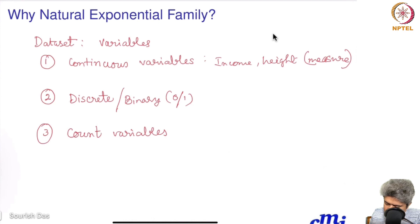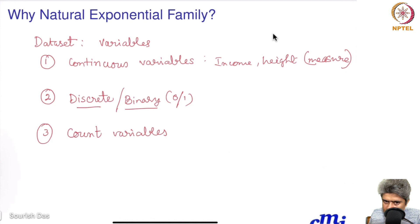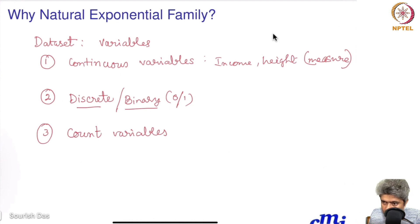The second category is discrete or binary variables — like a yes/no or zero/one decision, such as going north or south. The third category is count variables, which come out of a counting process, like the number of tumors, number of goals, or number of courses you want to take.